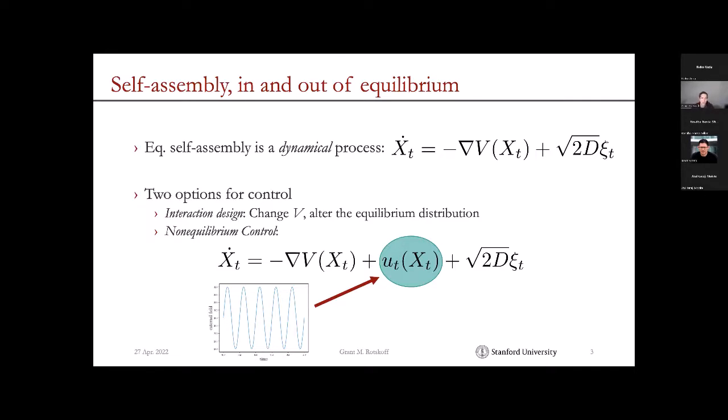If we wanted to design self-assembly, if we wanted to target particular structures or properties of physical systems by having them self-assemble in a particular way, then we have a few different options for control. The two options for control are to either change the potential energy of the system, change V to alter the equilibrium distribution, or if we assume that the system is in at least a steady state...